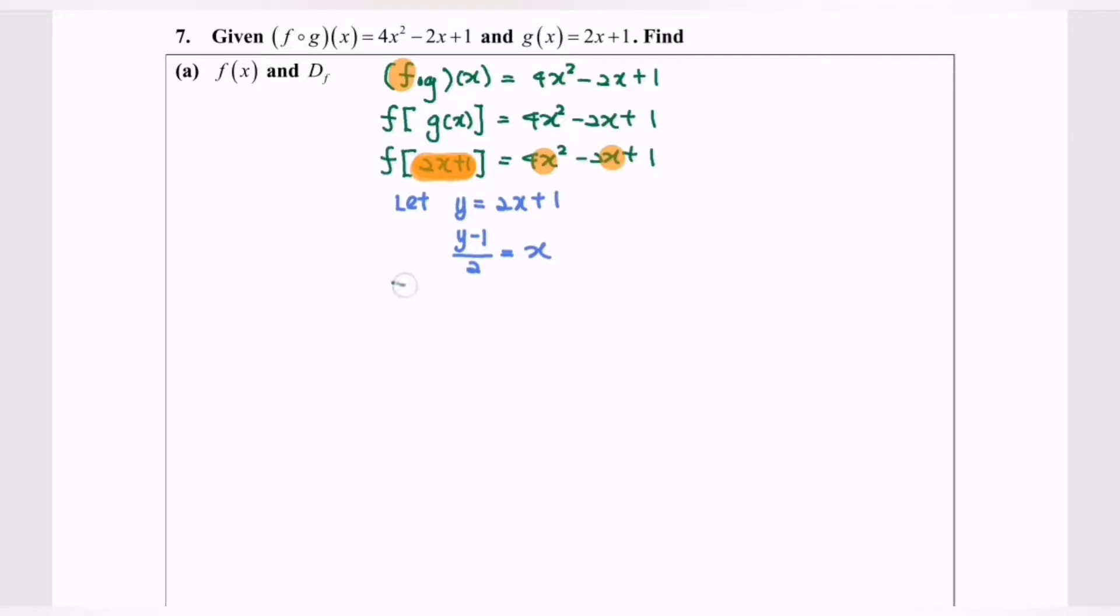So f(y) = 4(y - 1)² over 2², which equals 4, minus 2 times (y - 1) over 2, plus 1. Simplifying, we have f(y) = (y - 1)² - (y - 1) + 1.